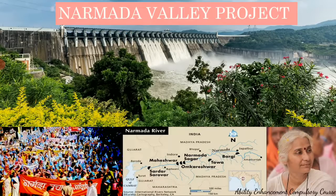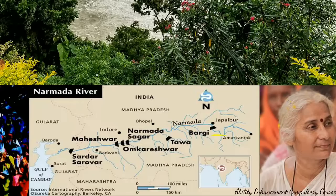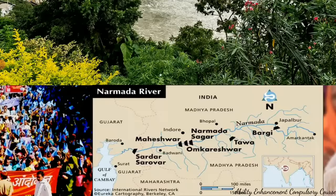One project that gained a lot of attention in India was the Narmada Valley project. Maharashtra has one of the maximum number of dams, followed by Madhya Pradesh and Gujarat. Under the Narmada Valley project, a huge dam — the Sardar Sarovar Dam — was planned, along with many other dams along the entire stretch of the Narmada River.